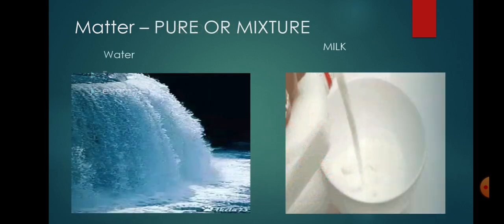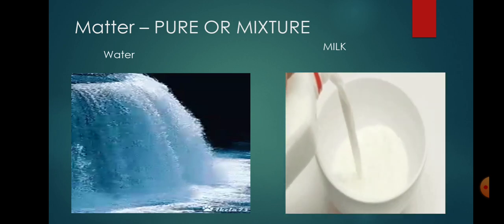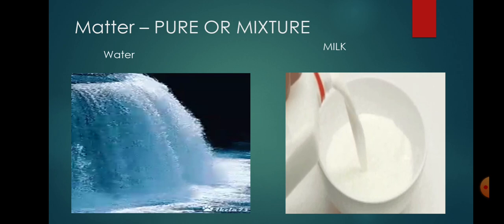But if we look at it from a scientist's perspective, matter is defined differently as pure or impure. For example, if we take a glass of water, what are the particles of water? We will only have particles of H2O. If we take milk, we might say our milk is very pure, but according to a scientist, it is not. Why? Because milk is a mixture of 3 to 4 different types of particles mixed together.